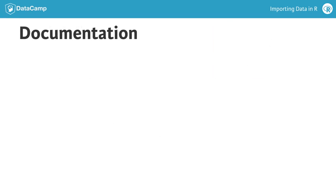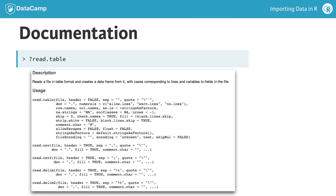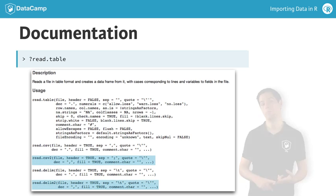If you have a look at the documentation of read.table, you'll see that there are two more functions in there that we haven't discussed yet: read.csv2 and read.delim2.